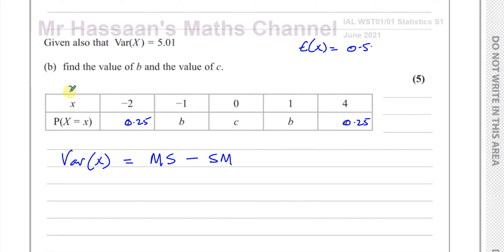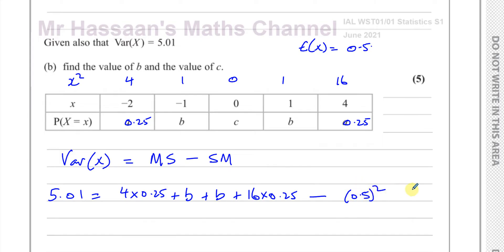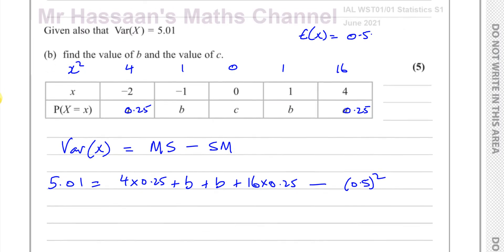The mean of the squares is where you take the X values and square them. Squaring negative 2, negative 1, 0, 1, and 4 gives 4, 1, 0, 1, and 16. Then you multiply each squared value by its probability. So the variance of X is 5.01 equals 4 times 0.25, plus 1 times B, plus 0 times C, plus 1 times B, plus 16 times 0.25, minus 0.5 squared. That is the mean of the squares minus the square of the mean, equal to the variance of X which is 5.01.